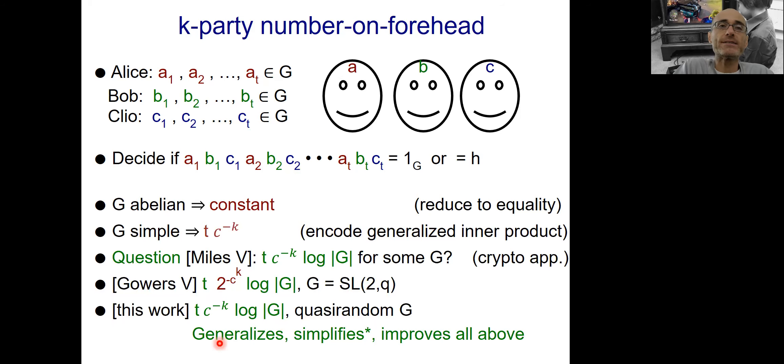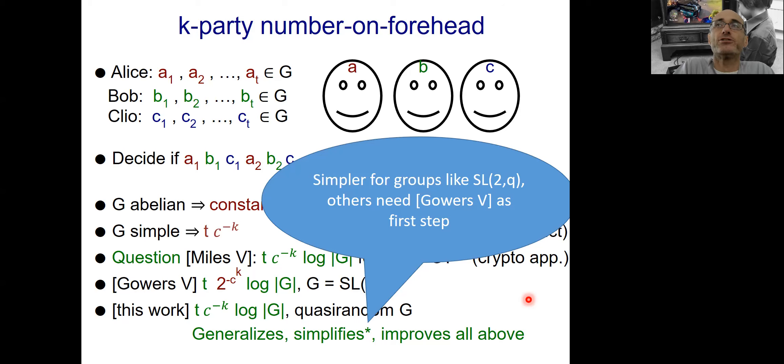So in this work, we achieve indeed the state-of-the-art bounds. So we prove a bound, which is T times singly exponential in k, and then log the size of the group. This works for any quasi-random group. And this work, again, generalizes, simplifies, and improves the above works. There is a catch, and that's why you have the star next to simplifies. That the simplification is really striking for groups like SL(2,q). The proof is really simple, and you don't need any of the previous machinery. For groups which are not as good for our purposes as SL(2,q), you actually will still need the previous work with Gowers to kickstart the process, and then you can use our machinery to get a better bound. But if you just want SL(2,q), or even groups which are close to SL(2,q), in a certain sense, you don't need the previous machinery.